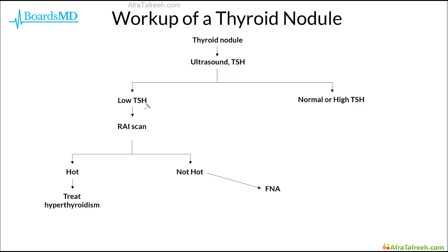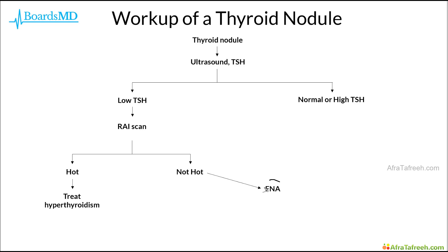If that TSH is low, then our next step is to get a radionuclide scan. If the radionuclide scan shows a hot nodule, then we simply treat that patient's underlying hyperthyroidism, as this is often the cause of these hot nodules — for example, in the case of Graves' disease. However, if we get that radionuclide scan and find that the nodule is not hot, then our next step is going to be to get a fine needle aspiration, or FNA.